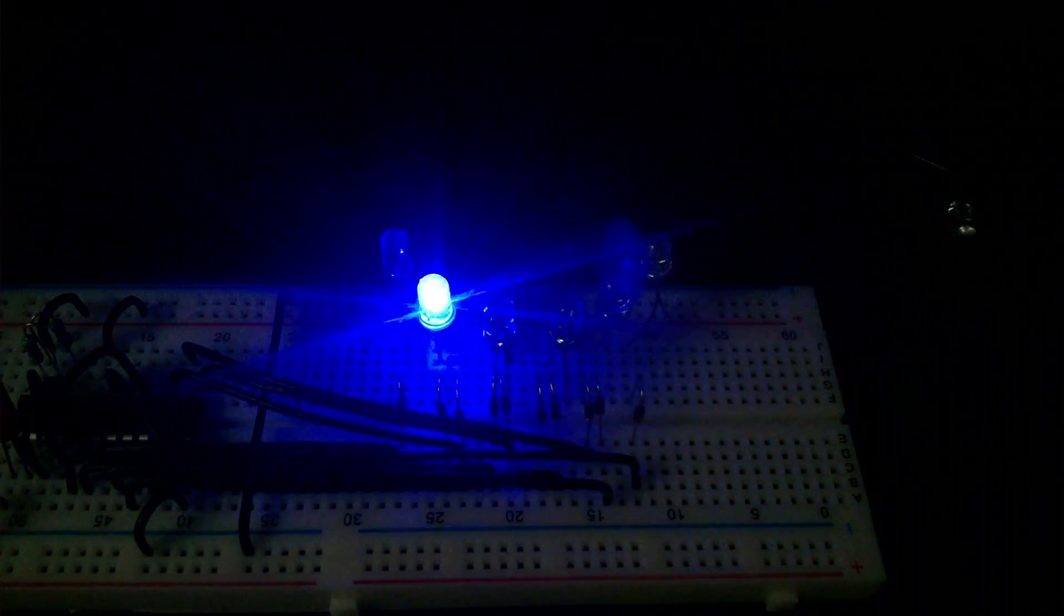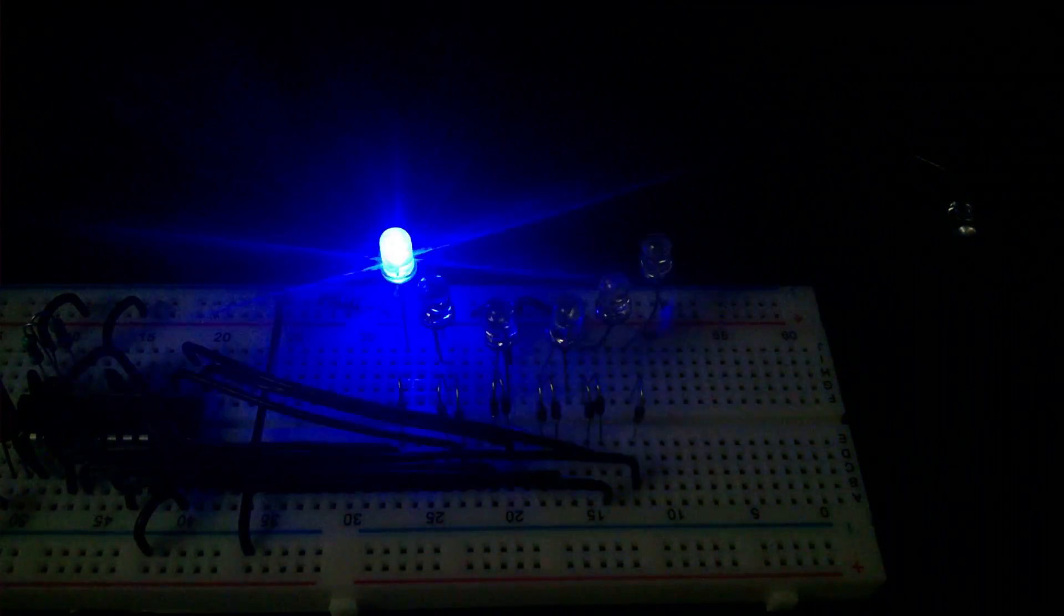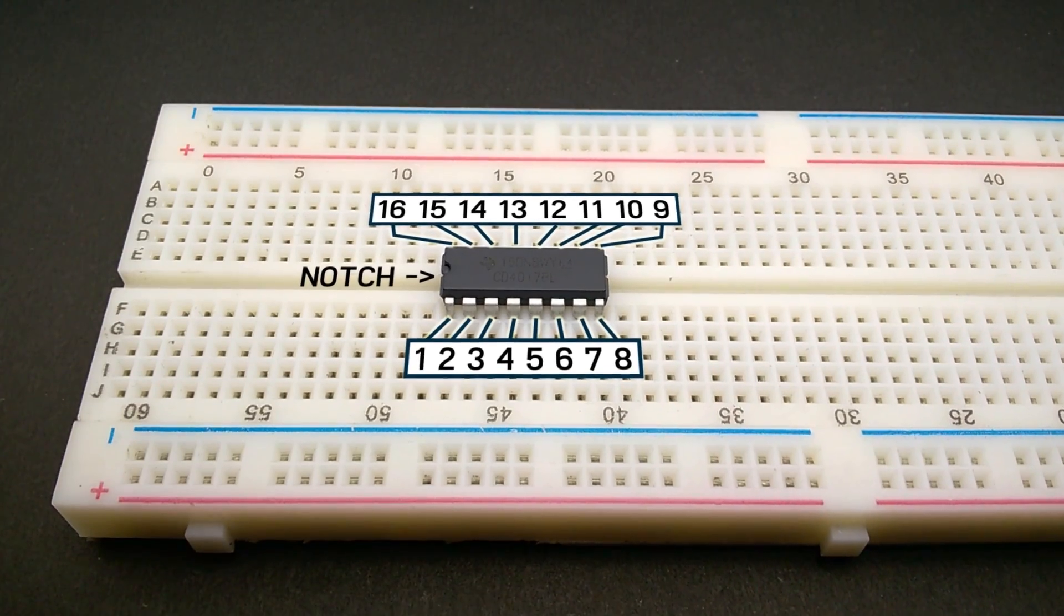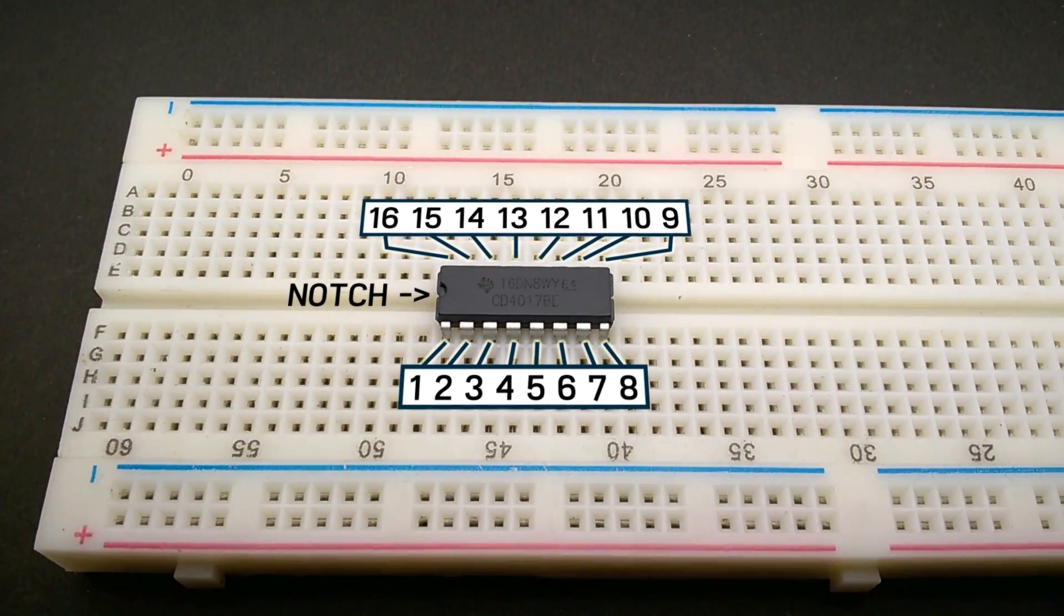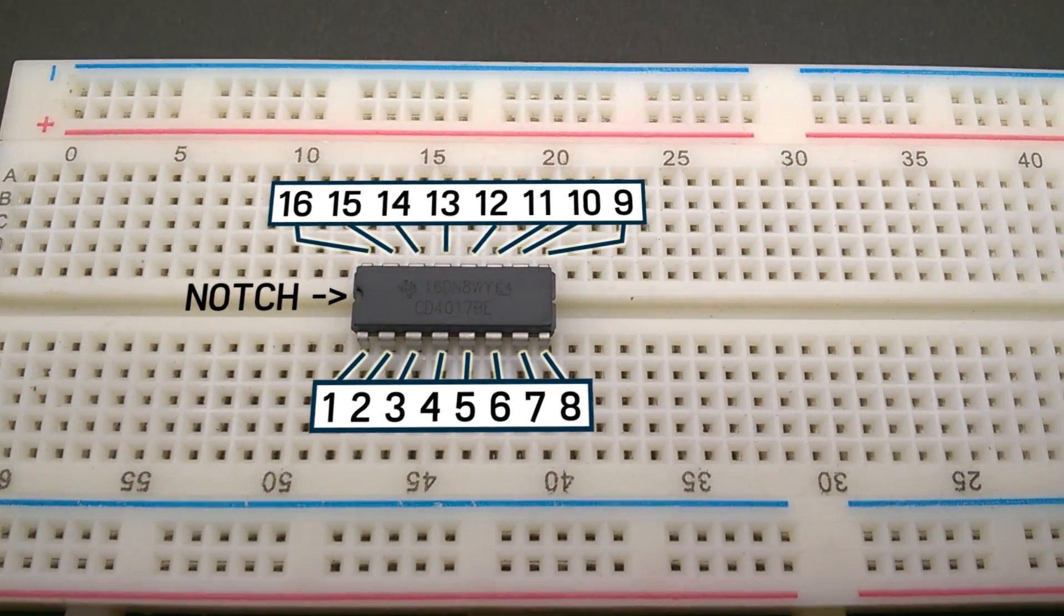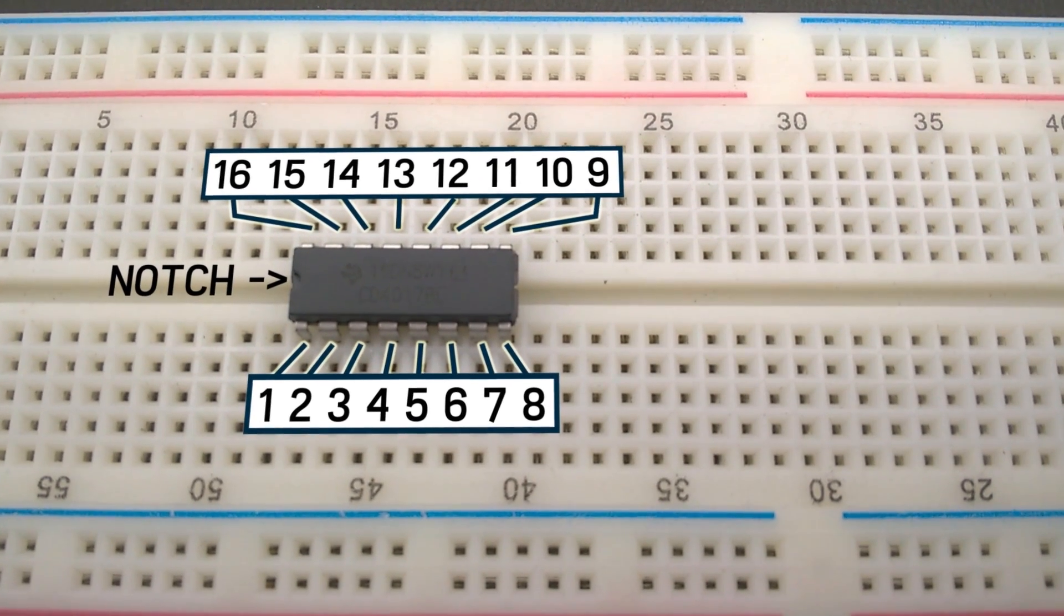So let's build one and understand how it works. The most common IC that comes to our mind when we think about sequencing circuits is 4017 IC. So let's have a look at what this IC can do.